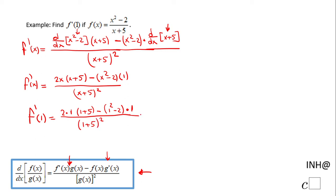Let's see what we get. We get 2 times 1, which is 2, times 1 plus 5 is 6, minus 1 squared is 1, minus 2 is negative 1, times 1, over 1 plus 5 is 6, 6 squared.